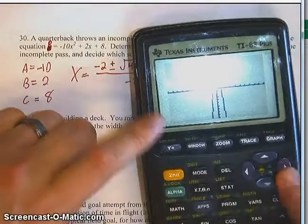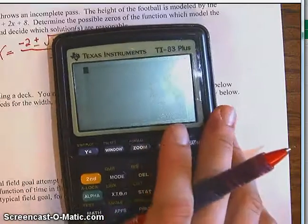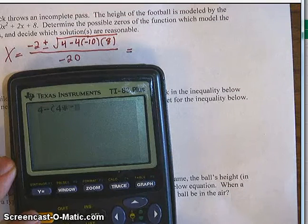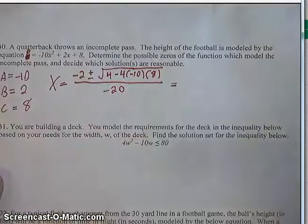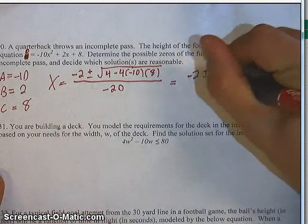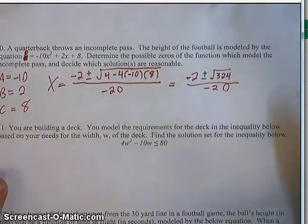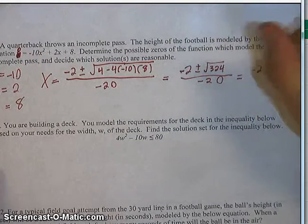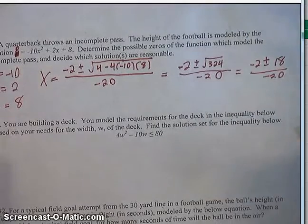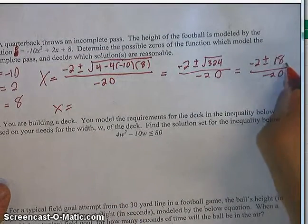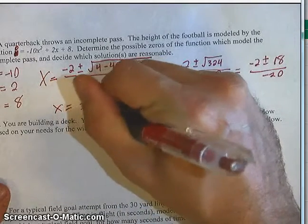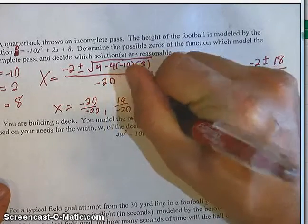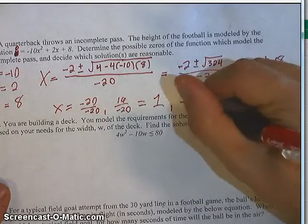Let's do the square root part in the calculator: 4 minus 4 times negative 10 times 8 equals 324. So this is negative 2 plus and minus the square root of 324, divided by negative 20. The square root of 324 is just 18. So we've got negative 2 plus and minus 18, divided by negative 20. Negative 2 minus 18 is negative 20, divided by negative 20. And negative 2 plus 18 is 16, divided by negative 20. When you reduce these, you've got 1 and negative 8 tenths.